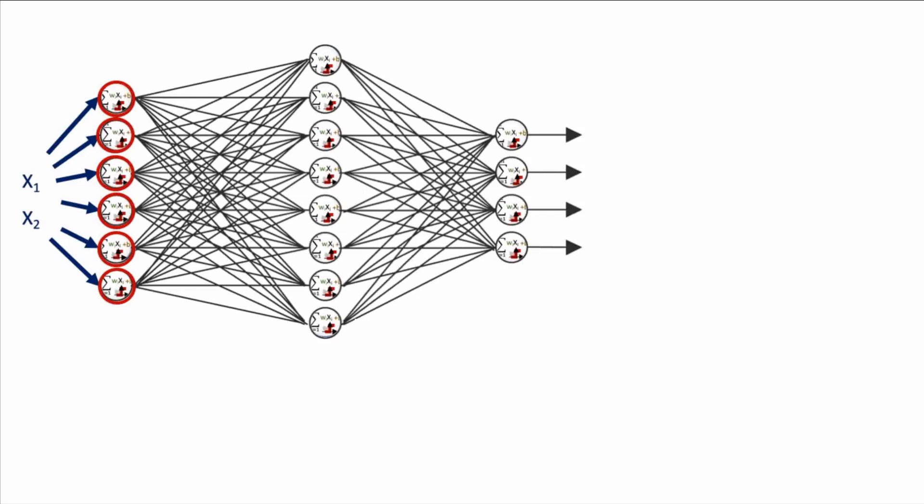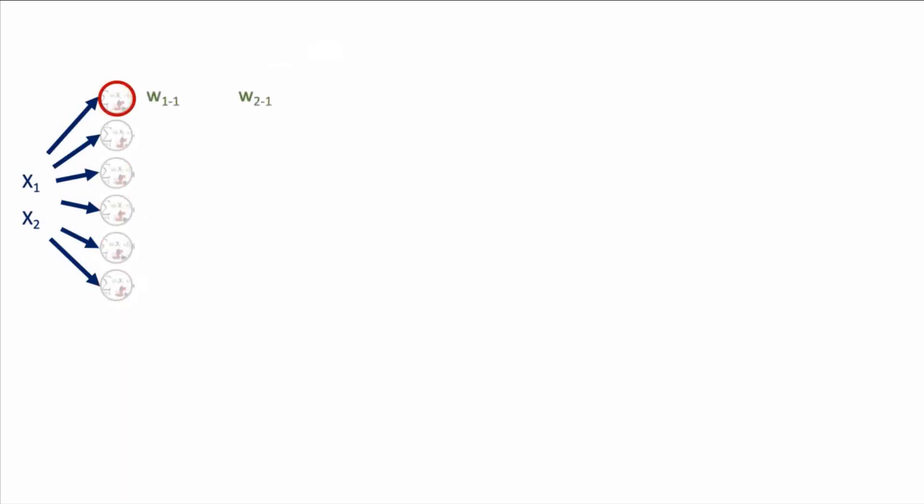So for the neurons in this first hidden layer of this network shown, neuron one needs to find two weights and one bias, neuron two needs to find two weights and one bias, etc. for all six neurons.